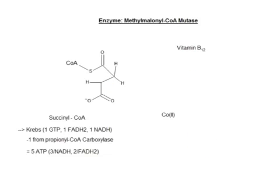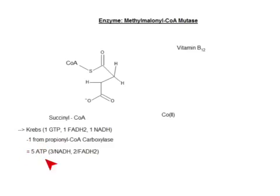So the big picture is that succinyl-CoA goes right into Krebs. After succinyl-CoA, we get a GTP from succinyl-CoA synthetase, an FADH2 from succinate dehydrogenase, and an NADH from malate dehydrogenase. But we had to spend an ATP in the carboxylase step. So we end up with 3 ATP from the NADH, 2 ATP from the FADH2, 1 GTP, minus 1 ATP — a net of 5 ATP. Our succinyl-CoA does not give us the full amount from 2 acetyl-CoAs; we actually get a lower yield from an odd-chain than from an even-chain fatty acid. In the next video, I'll talk more about accounting and how to solve for ATPs from different types of fatty acid chains.